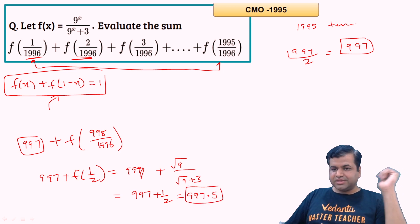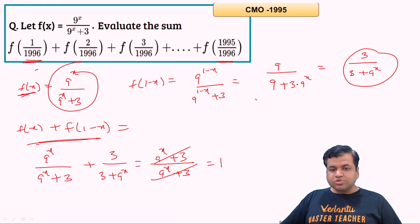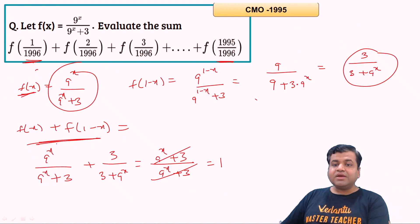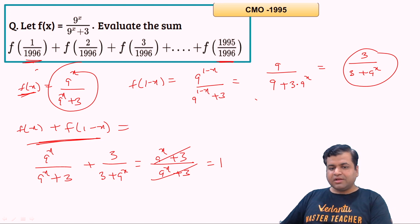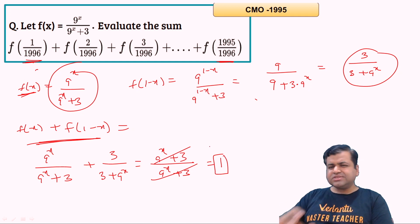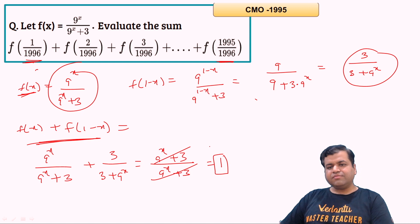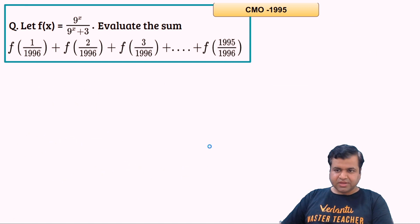So the final answer is 997 + 1/2 = 997.5. In this question, what was important to observe was that f(x) + f(1 − x) = 1, which is a standard approach. In JEE, many questions in India use this exact concept.